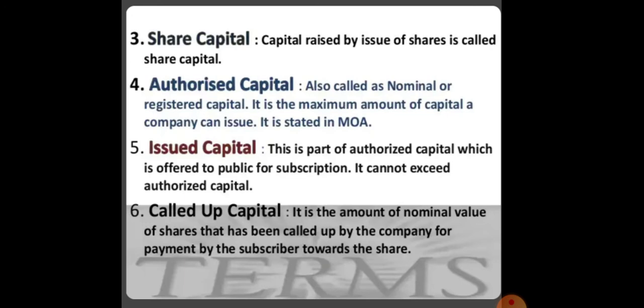The next is authorized capital — it is the maximum amount of capital a company can issue. It is stated in the MOA, i.e., Memorandum of Association, which is also known as the charter of the company. It is compulsory for all companies to have a Memorandum of Association.